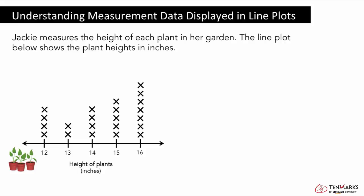Now let's take a look at another real world example using a line plot. Jackie measures the height of each plant in her garden. The line plot below shows the plant heights in inches. Remember, the numbers below represent the units of measure, and 1 X represents 1 plant with that height.